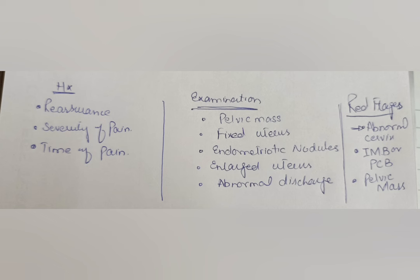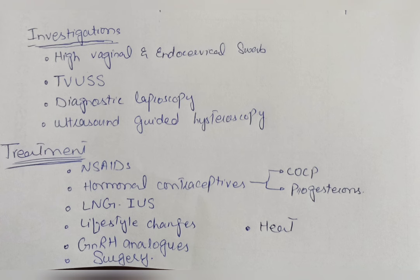Most importantly, in dysmenorrhea there are red flags. Red flags include three things: first, an abnormal cervix found on examination; second, a pelvic mass found on examination; and third, on history — intermenstrual bleeding or post-coital bleeding. Intermenstrual bleeding can occur in any female, and post-coital bleeding should be asked about if the patient is sexually active.